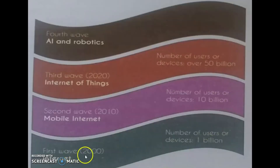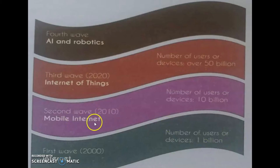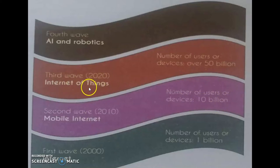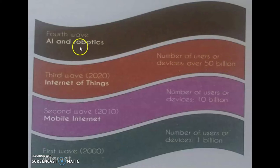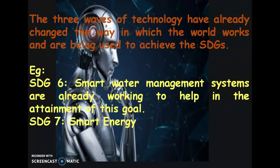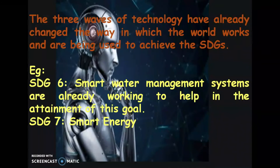First wave: Internet, around year 2000, with 1 billion users or devices. Second wave: Mobile Internet, with 10 billion users or devices. Third wave: around 2020, Internet of Things, with over 50 billion users or devices. Fourth wave: AI and Robotics. The three waves of technology have already changed the way the world works and are being used to achieve the SDGs.